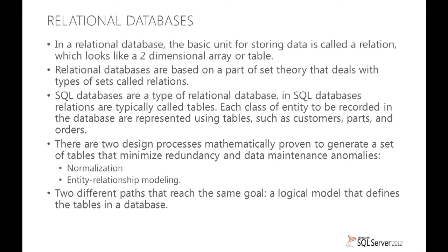A relational database gets its name because the basic unit for storing data is called a relation. On the surface they look very simple — like a two-dimensional array or a table with rows and columns. But there are a lot of rules about how you need to structure your relations so that they're as efficient as possible at storing data. Those rules were originally defined back in the 1800s by the mathematicians who were coming up with set theory.